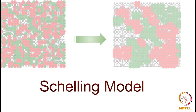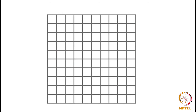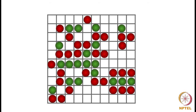Before we start the implementation, I'll give you a brief overview of the model. Let's assume there is a population of people and every person is either of type 0 or type 1. These people live in a city which is like a grid — there are cells in this grid where people live. Some cells will have people and some will be empty, so every cell will either have a person of type 0, a person of type 1, or it will be empty.